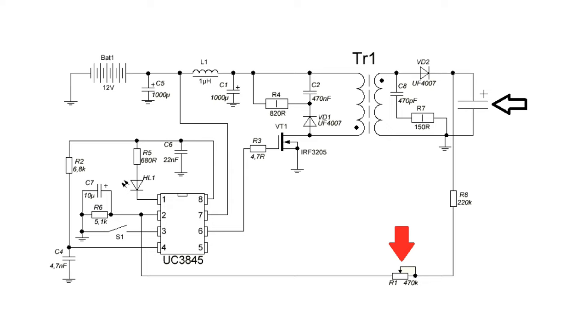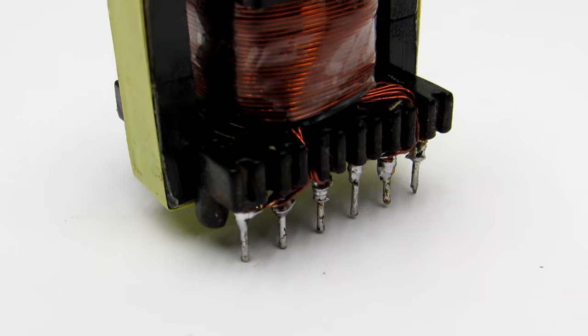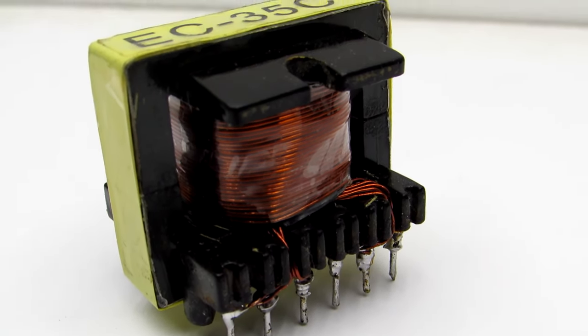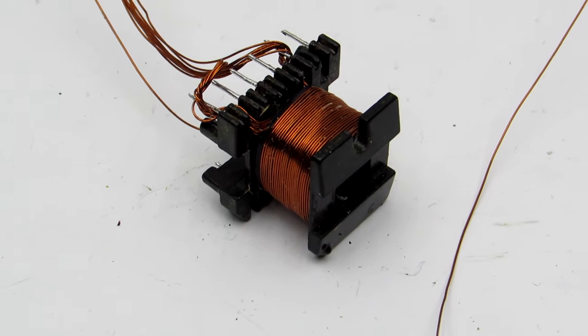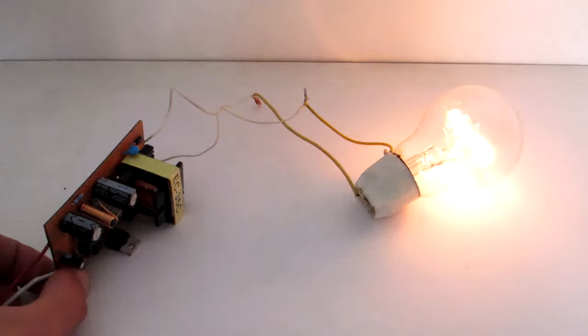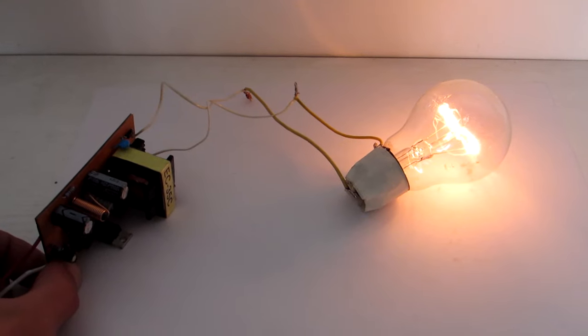Thus, you can set the voltage to which the capacitor must be charged. Let's start with the most difficult, I mean the winding of the transformer. It has a pair of winding secrets. If done correctly, the power transistor will not be heated, even if the converter is loaded with an incandescent lamp, for example 40W.